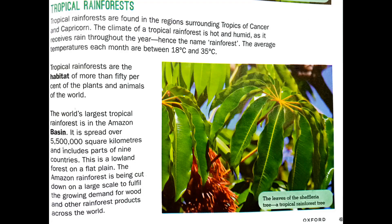Tropical rainforests are found in the region surrounding the Tropics of Cancer and Capricorn. The climate of the tropical rainforest is hot and humid, as it receives rain throughout the year — hence the name rainforest.